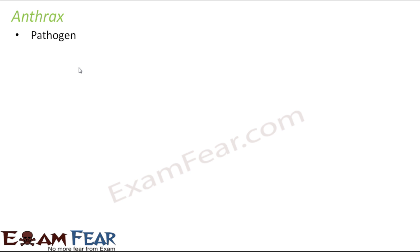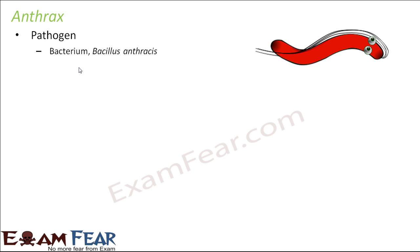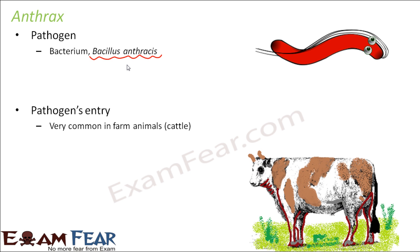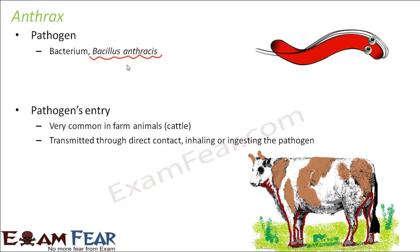Anthrax is a very common disease which attacks mostly cattle. From cattle, it sometimes also spreads to human beings. The pathogen which causes this is a bacterium called Bacillus anthracis — that is why the disease is named anthrax. It is very common in farm animals, especially cattle, and is transmitted through direct contact, inhalation, or ingestion of the pathogen.